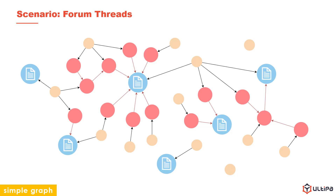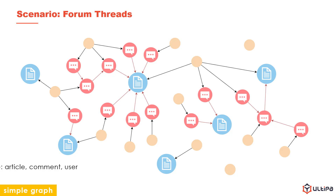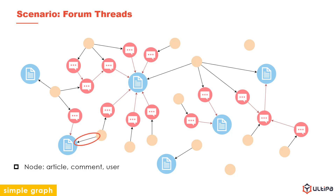The blue nodes represent the articles, which are the first posts of each thread. The red nodes represent the comments, which are the rest of posts in the thread. Yellow nodes, same as the previous example, are users who post articles and comment. There are two types of edges: a red edge points from a comment to an article or another comment, showing which post this comment is about. A black edge points from a user to a comment or an article that he posts.